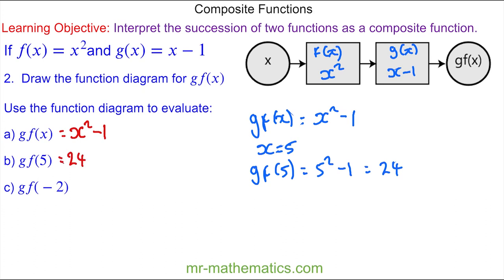And for question c, g f of negative 2. Again, we'll substitute the negative 2 into the x term. So we have negative 2 squared minus 1. Negative 2 squared is 4, and 4 minus 1 is 3. Thank you for watching and I hope you found that useful. Thanks again and take care.